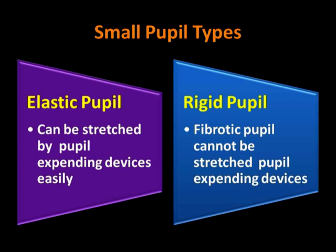On the basis of elasticity, small pupils can be broadly divided into two groups: one, elastic pupil, which can be stretched by pupil expanding devices easily; and two, rigid or fibrotic pupil, which cannot be stretched by pupil expanding devices.